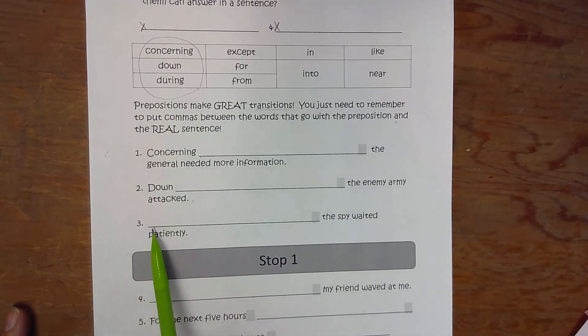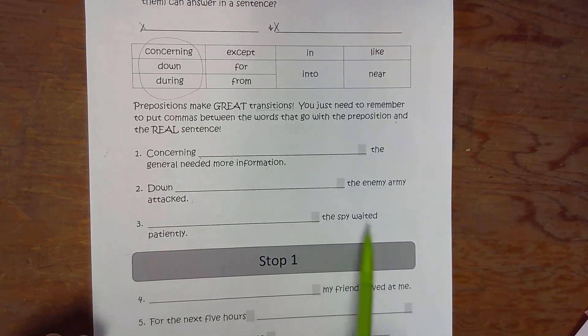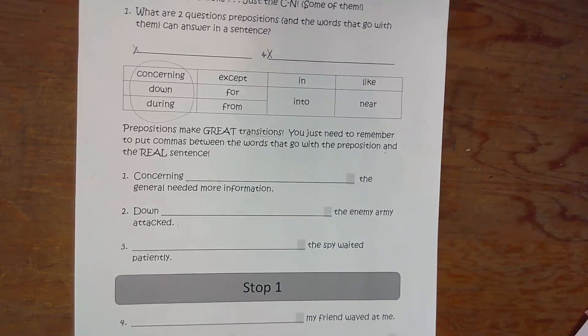Here it should be pretty obvious you will need to start with during, and then during what, comma, the spy waited patiently. That's your assignment for today.